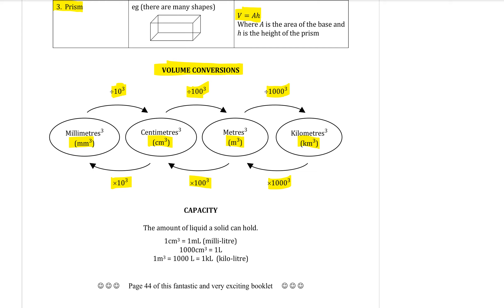Volume measures how much space is inside a three-dimensional shape — how much it takes to fill it up. Often when you want to find the volume of something you might actually be talking about a liquid, for example how much water a tank can hold. So sometimes it is important to convert millimetres cubed and centimetres cubed into capacity units such as litres, millilitres, megalitres, or kilolitres, so that we can find out volume in liquid units.